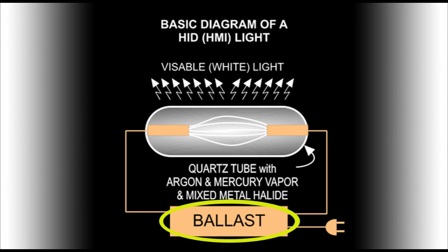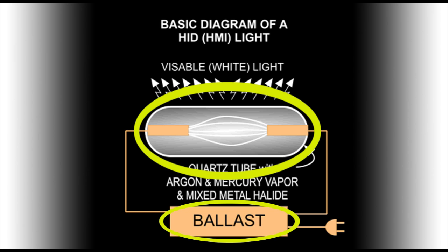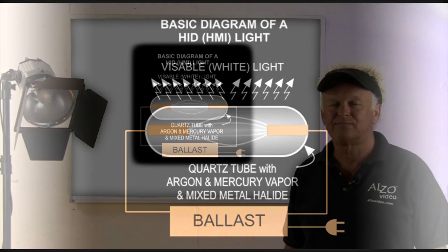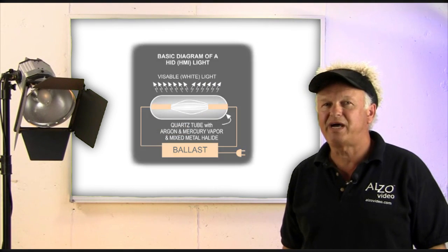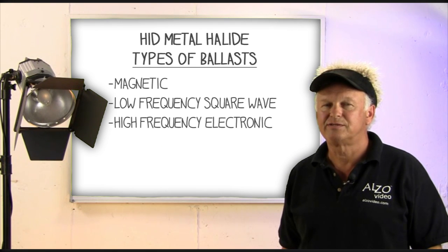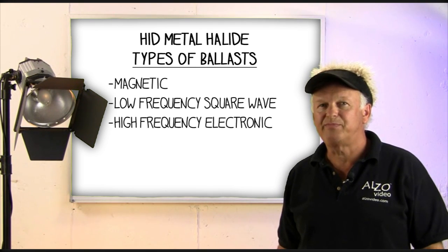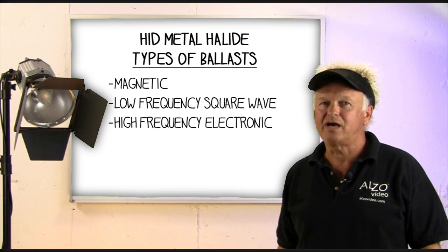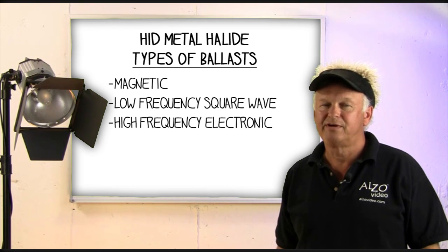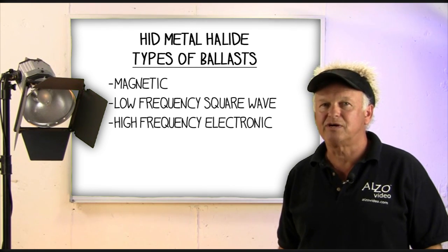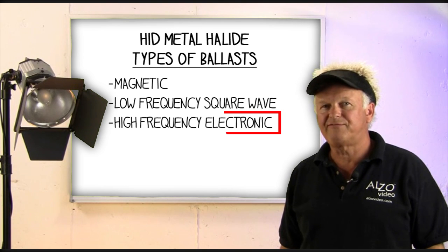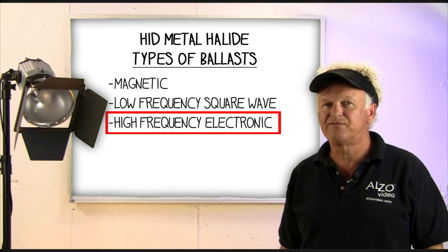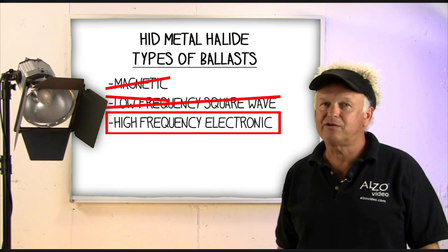An electronic ballast is required to start the arc and then maintain a constant power in the arc to produce a stable color temperature. In all cases, the ballast is matched to the bulb. There are three types of ballast for HID lights: the first is a magnetic ballast, then there is a low frequency square wave, and a high frequency electronic.